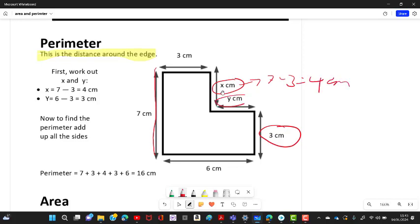Similarly, Y is six take away three. There's three and Y equals six. So Y equals six take away three, which is three centimeters.